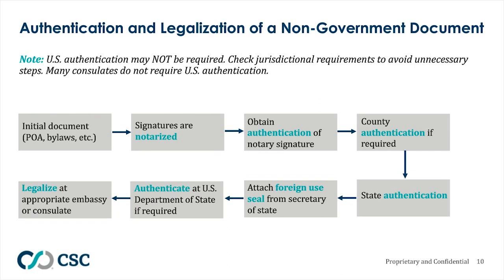The flow for authentication and legalization of a non-government document starts with an initial document such as a power of attorney or bylaws. Signatures are always notarized. From that notary you obtain an authentication, then you may need to obtain a county authentication, followed by a state authentication. Attach a foreign use seal from the Secretary of State's office, then it is authenticated at the U.S. Department of State, and your final step is to have it legalized at the appropriate embassy or consulate.